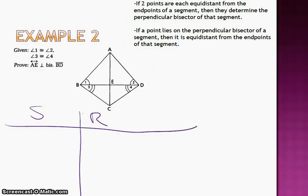I have angle 1 congruent to angle 2. Angle 3 is congruent to angle 4. And I'm trying to prove AE is the perpendicular bisector to BD. So, it doesn't seem like I'm as easy as my other one, but let's see what we've got. Angle 1 congruent to angle 2. Angle 3 congruent to angle 4. Let's take a look at what we have.